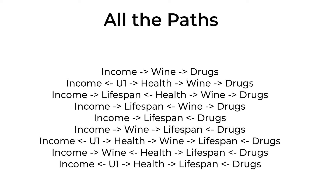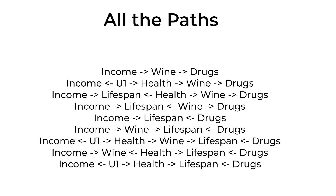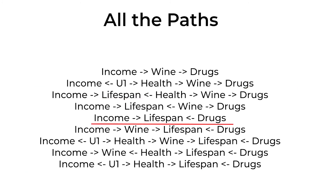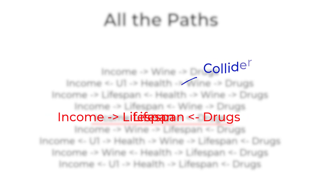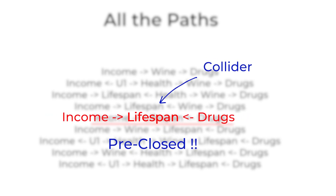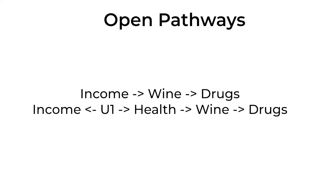We have several pathways: income to wine to drugs; income to U1 to health to wine to drugs; and several pathways going through lifespan, such as income to lifespan to drugs or income to wine to lifespan to drugs. Conveniently, lifespan will be a collider on any pathway that goes through it, because both arrows point toward lifespan. A collider means that pathway is pre-closed — we don't need to control for lifespan, and we don't want to.